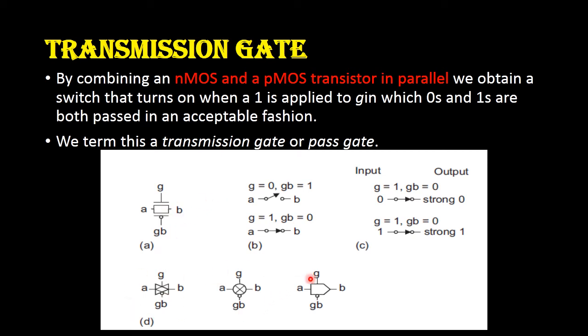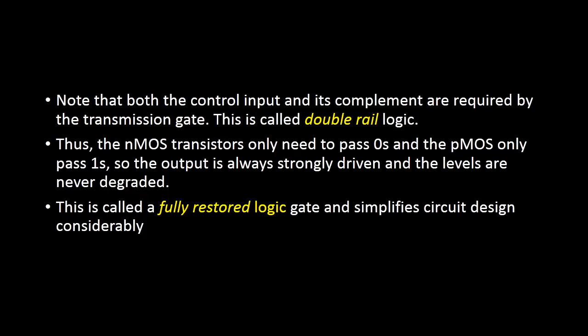These are the schematic symbols of the transmission gates. If we are using a transmission gate in logic, then it is called as double rail logic. We call it double rail logic because we are using the control input as well as its complement. At the same time you will be getting strong 0 and strong 1 at the output, therefore it is also called as fully restored logic.